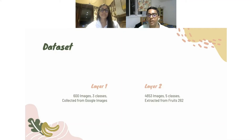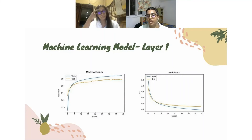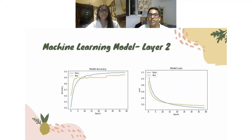For layer one, we had 600 images collected from Google Images. For layer two, which covered various different fruits, we had 4,653 images. We used a deep learning approach with a MobileNet V2 CNN algorithm, and I also experimented with the ResNet 50 algorithm. For layer one, the accuracy was 94.7% with a loss of 0.16. For layer two, the accuracy was 89% with a loss of 0.28.